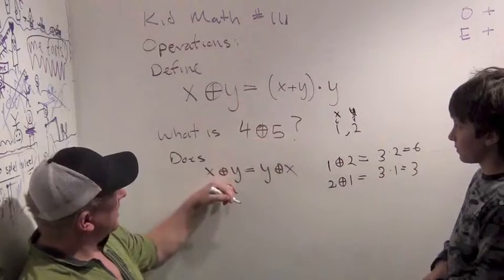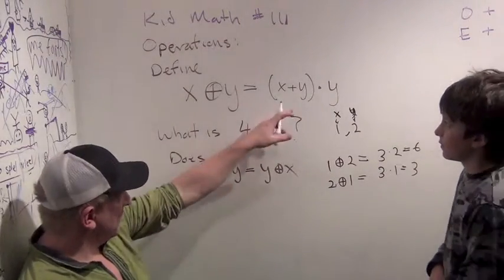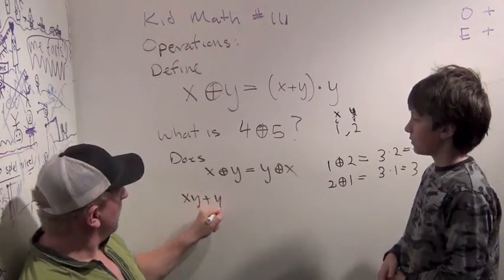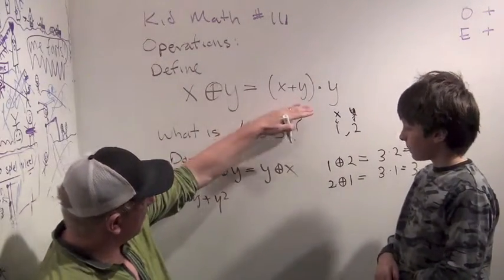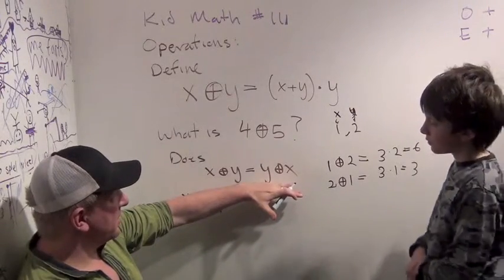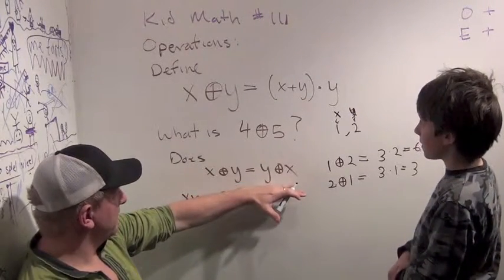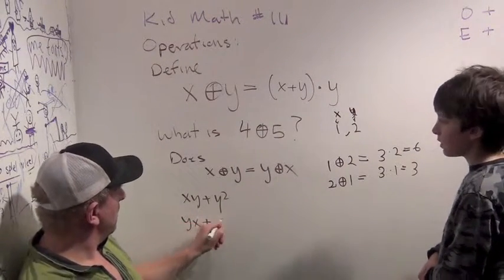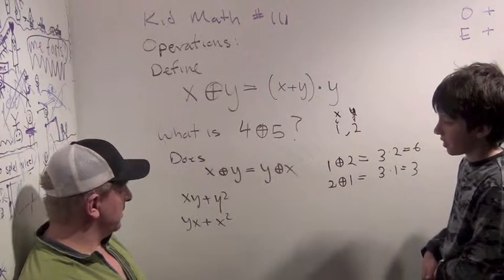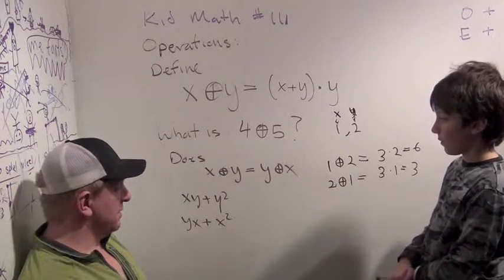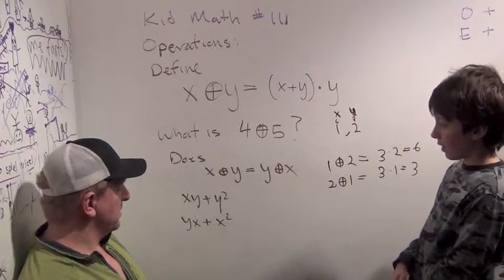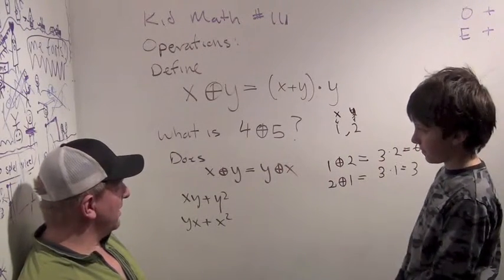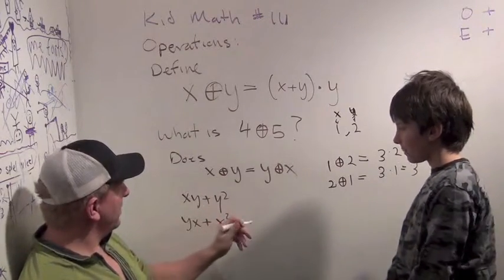we'll say x circle plus y is x squared, sorry, xy plus y squared, right? That's x circle plus y. And y circle plus x is going to be what? It's going to be yx plus y squared and plus x squared. Well, x plus x squared. Unless x and y are the same, or if one of them is 0, actually both of them are 0, well, if they're the same. Yeah, right. So this isn't usually going to be the same, right? Yeah.